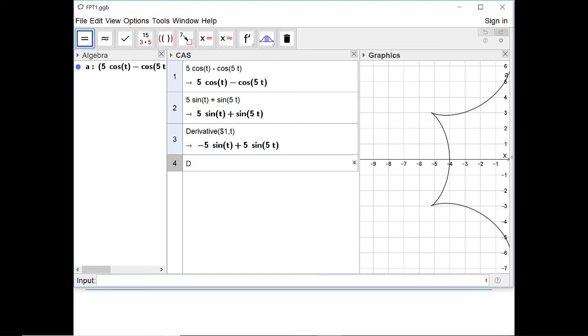Same again for dy/dt, so the derivative of the expression number two, and with respect to t, so put comma t, and that gives me 5 cos t plus 5 cos 5t. And finally I want to know dy/dx, which is dy/dt